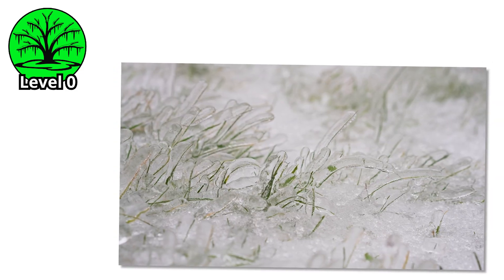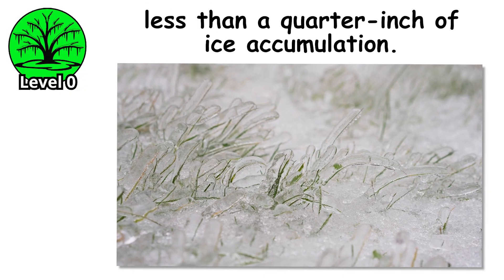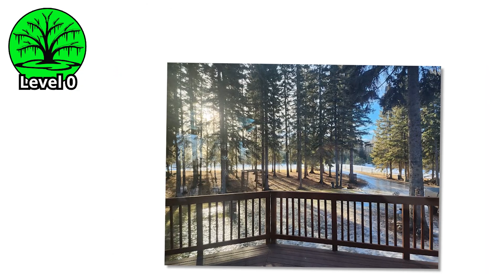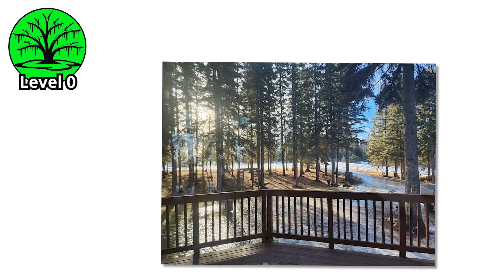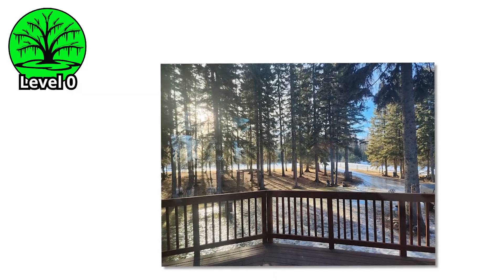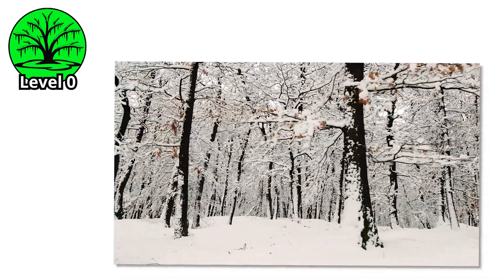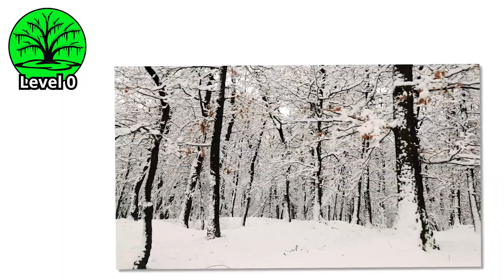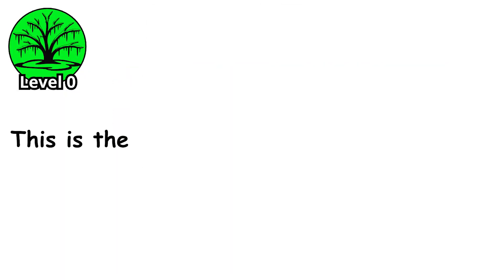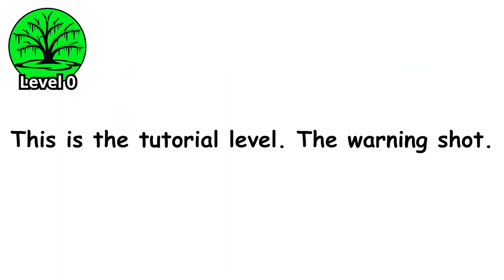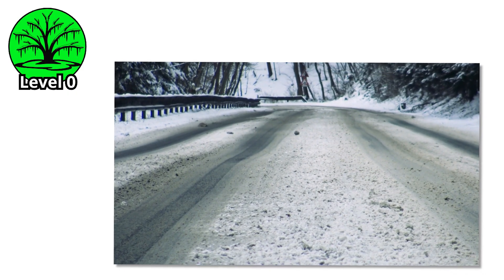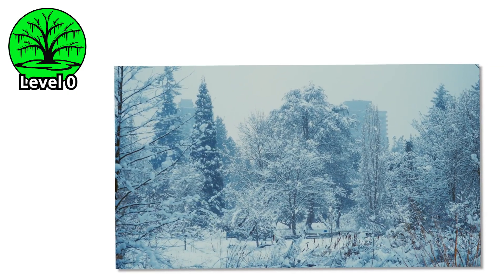At this lowest level, you're looking at less than a quarter inch of ice accumulation — enough to make your driveway a skating rink, enough to make driving feel like piloting a hockey puck. But your power's still on. Your trees are mostly intact. You can still make coffee. This is the tutorial level, the warning shot. The universe gently taps you on the shoulder to say: you have no idea what I'm capable of.